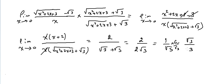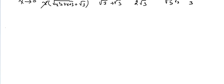We still have time, so let's do another one. Let's find the limit of (cos x - 1) / tan(2x) as x approaches 0. If we substitute 0: cos(0) is 1 minus 1, which is 0 in the numerator; tan(2×0) is 0 in the denominator. It's an undetermined form, so we have to change the form.